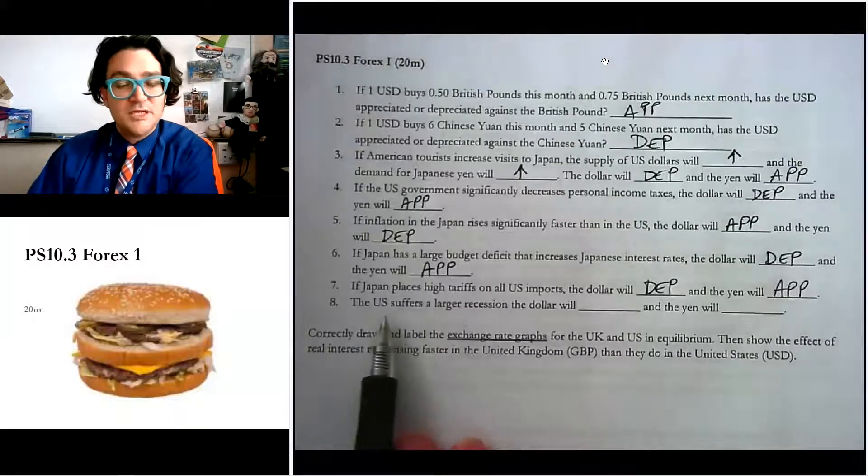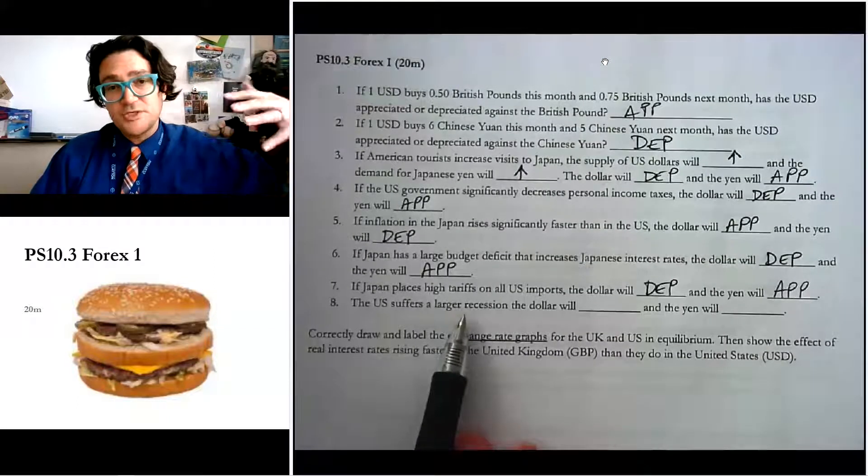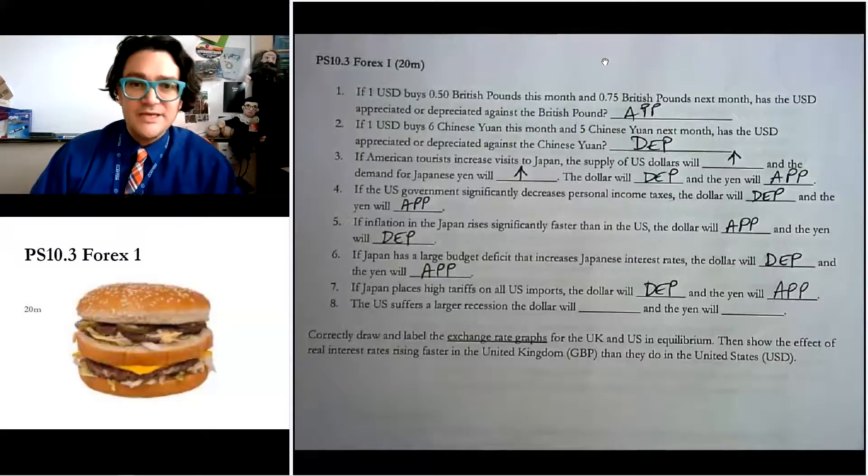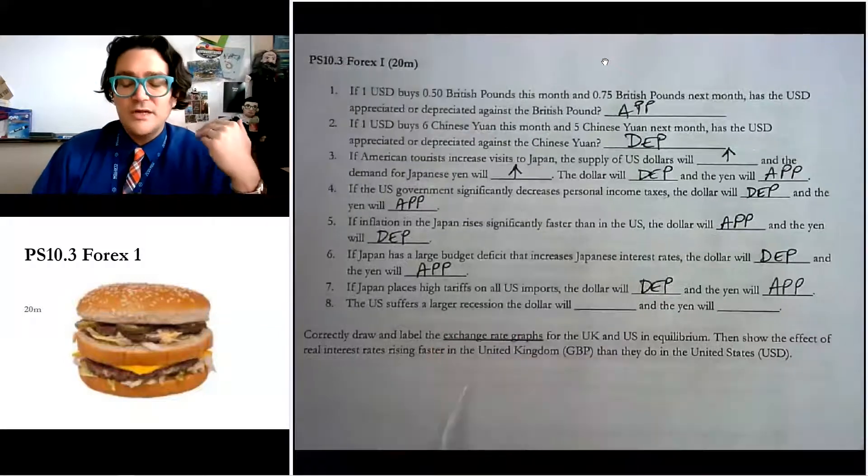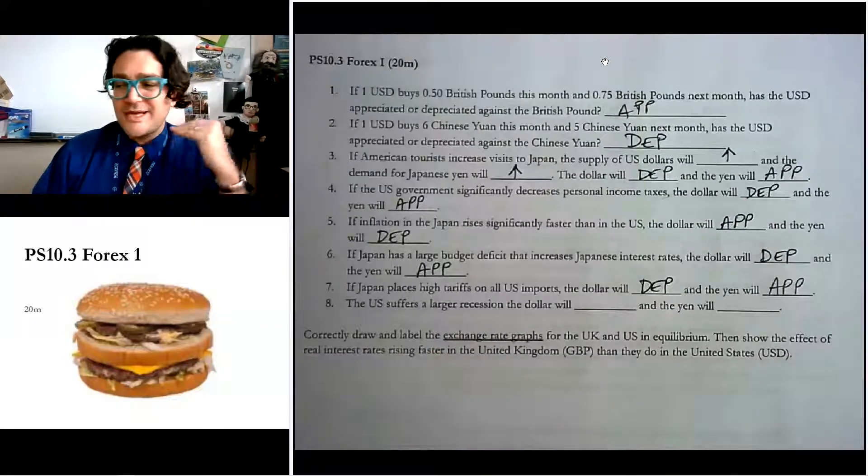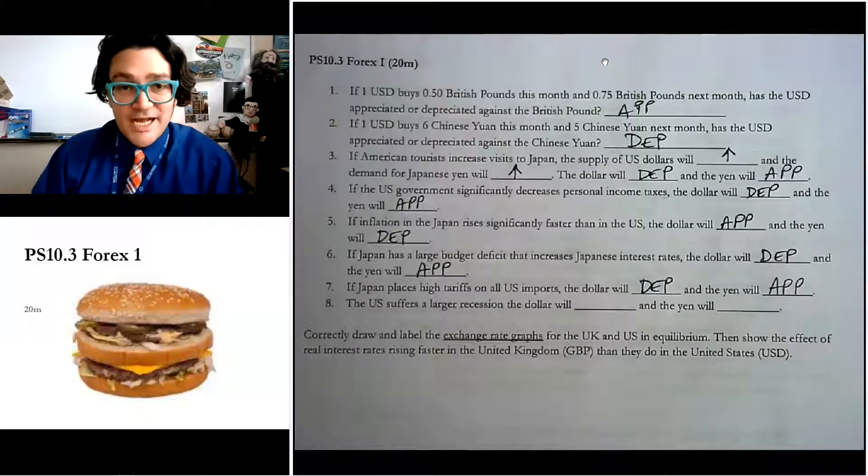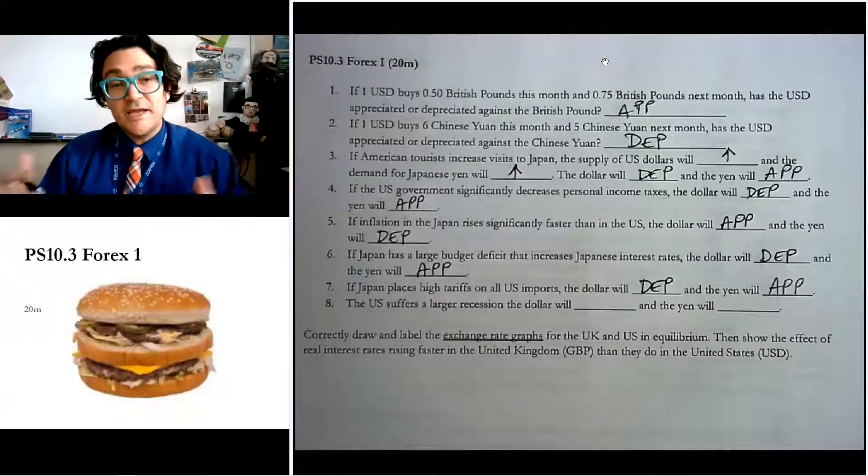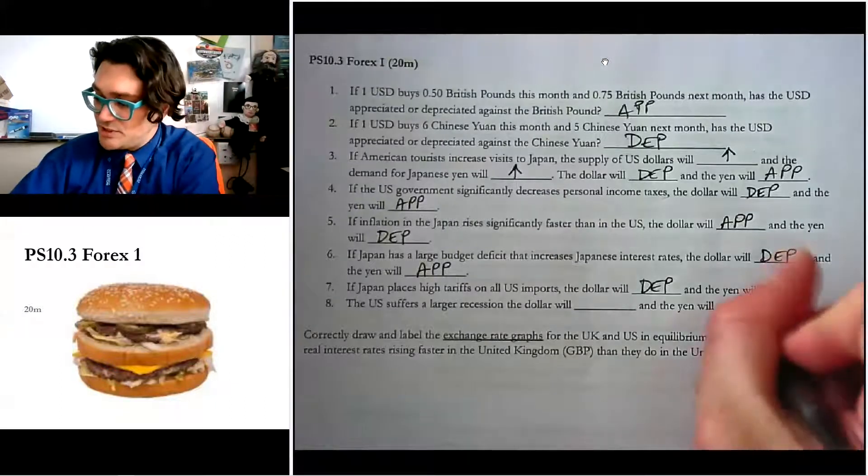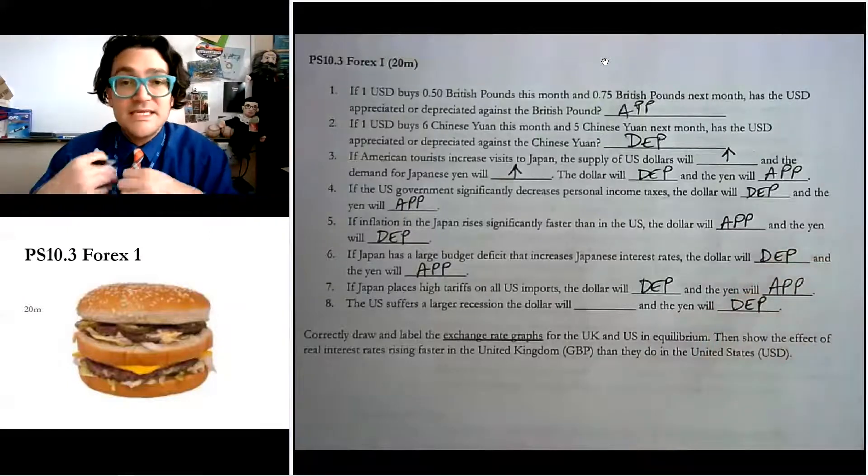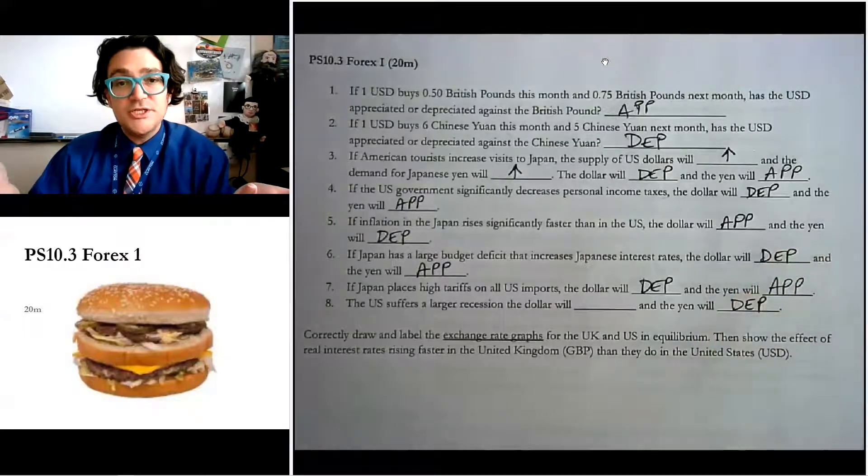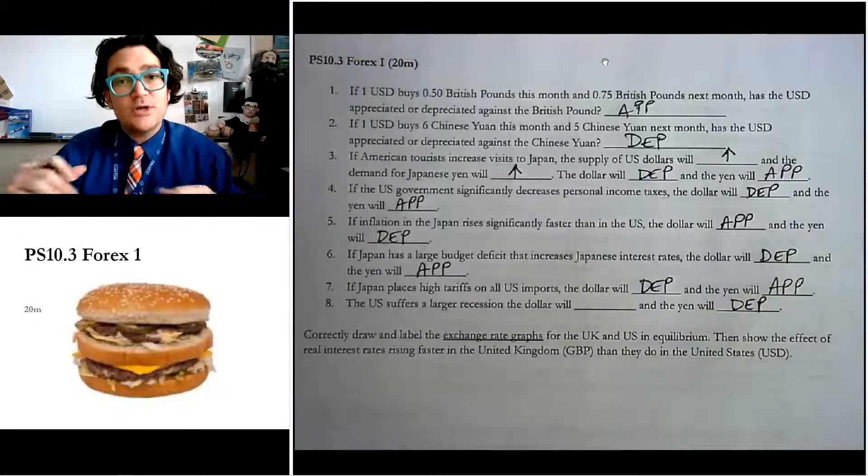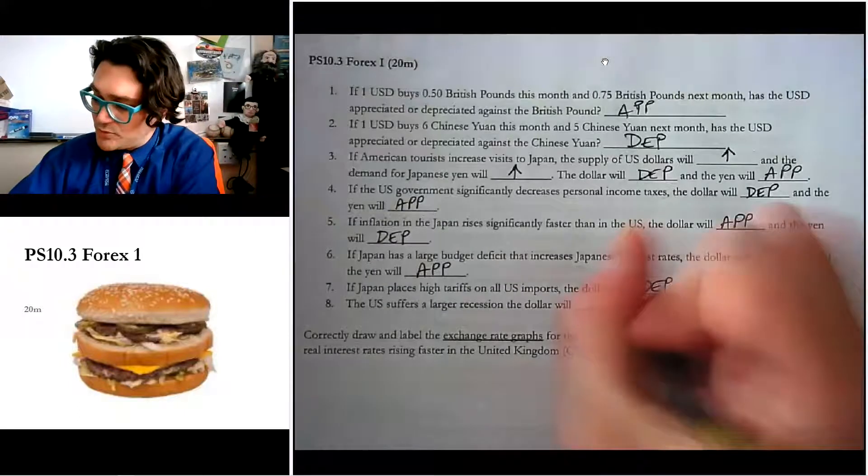If the U.S. suffers a large recession, a larger one compared to Japan, then that means the Americans aren't going to buy as much Japanese made stuff. So this is kind of similar and it's the opposite of number four. In this one, the Americans are like, I wish I could buy Japanese stuff, but I don't have a job. And so they don't demand as many yen. So the demand drops for the yen, causing the yen to depreciate. At the same time, they're not supplying as many dollars into the foreign exchange market because they don't need those yen anymore. So the supply of dollars is getting smaller, making the dollar go up in value and appreciate.